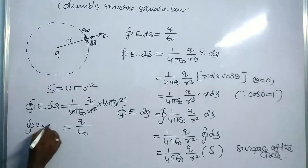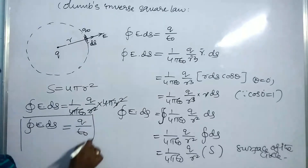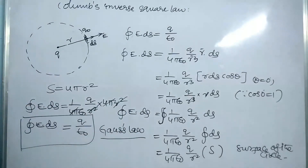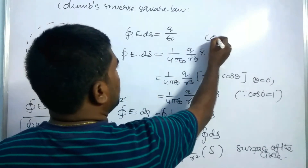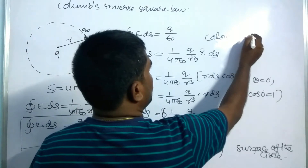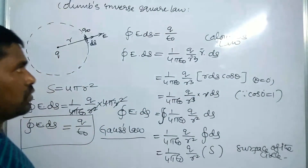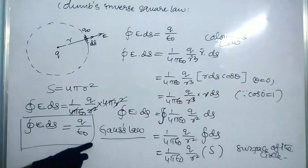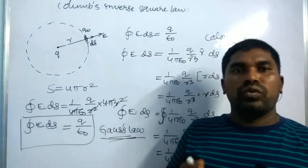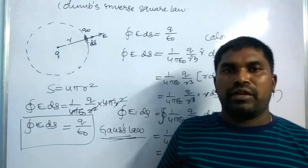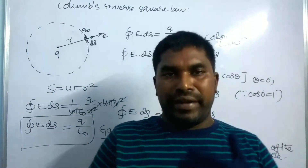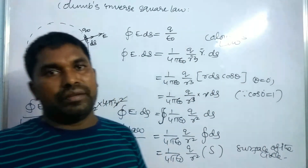So ∮E·dS = Q/ε₀, which is the Gauss law. This is the proof of the Gauss law by using Coulomb's inverse square law. And vice versa, by using the Gauss law, we can also derive the equation of Coulomb's inverse square law.